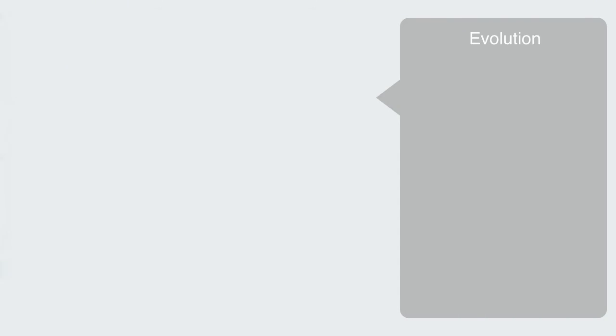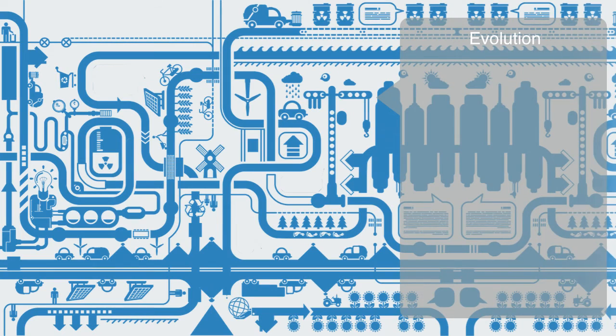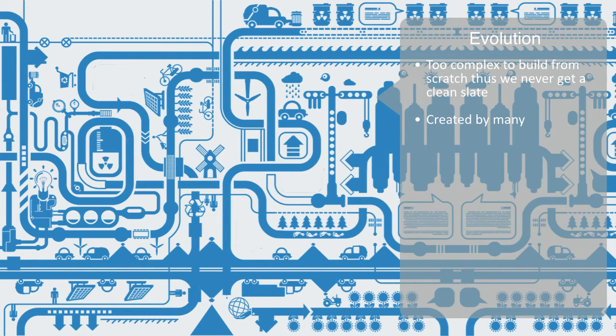These massive networks, like power grids and global supply chains, illustrate why evolution is very important within complex systems. Because they're too complex to build from scratch, we never get a clean slate. One person or organization could not create the internet with all its content. These things only really get created by many different actors with different local level agendas.